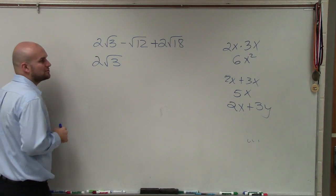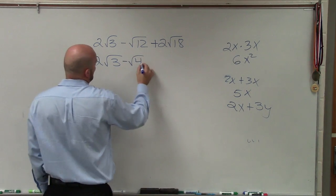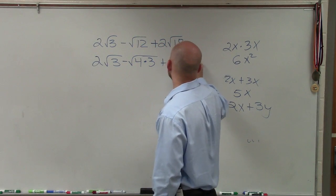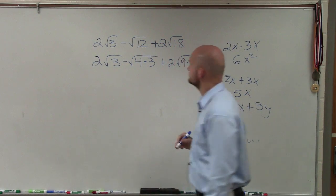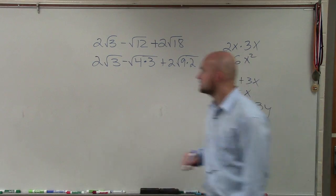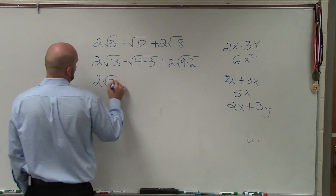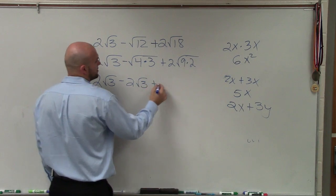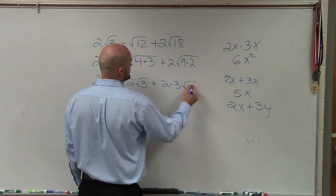So I have 2 times square root of 3. I can rewrite this as 4 times 3. And I can rewrite this plus 2 times 9 times 2. Therefore, I have 2√3 minus square root of 4 is 2√3 plus 2 times 3√2.